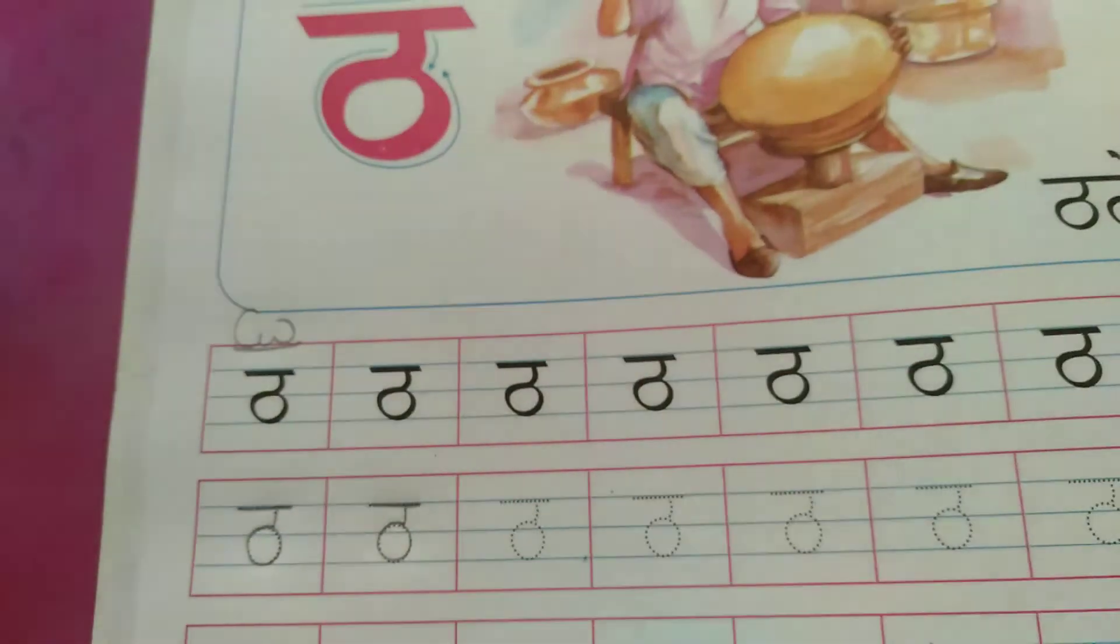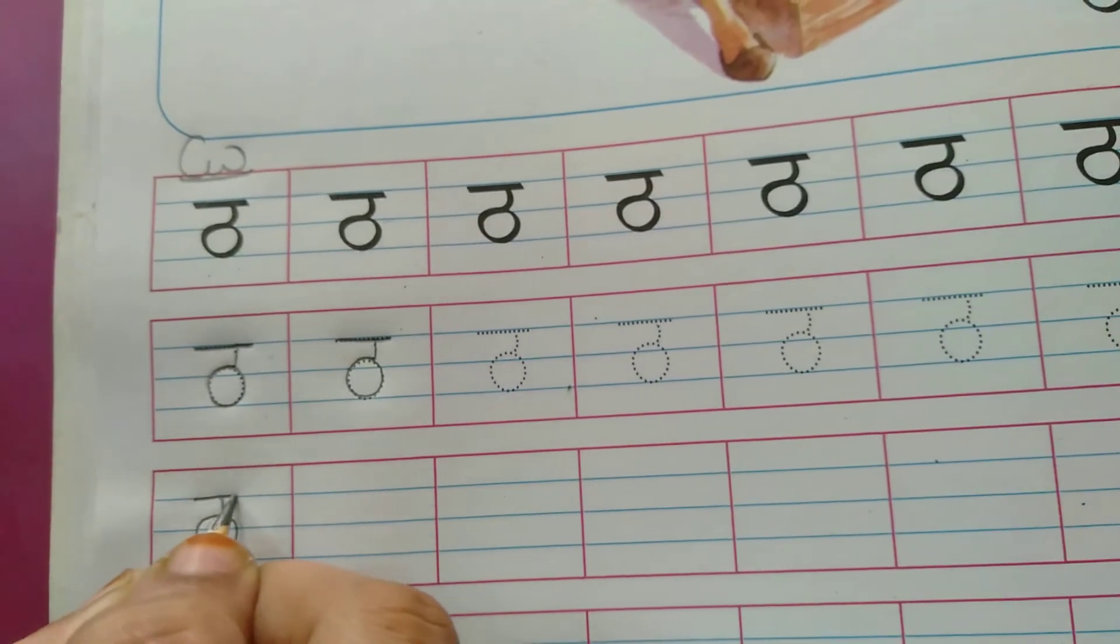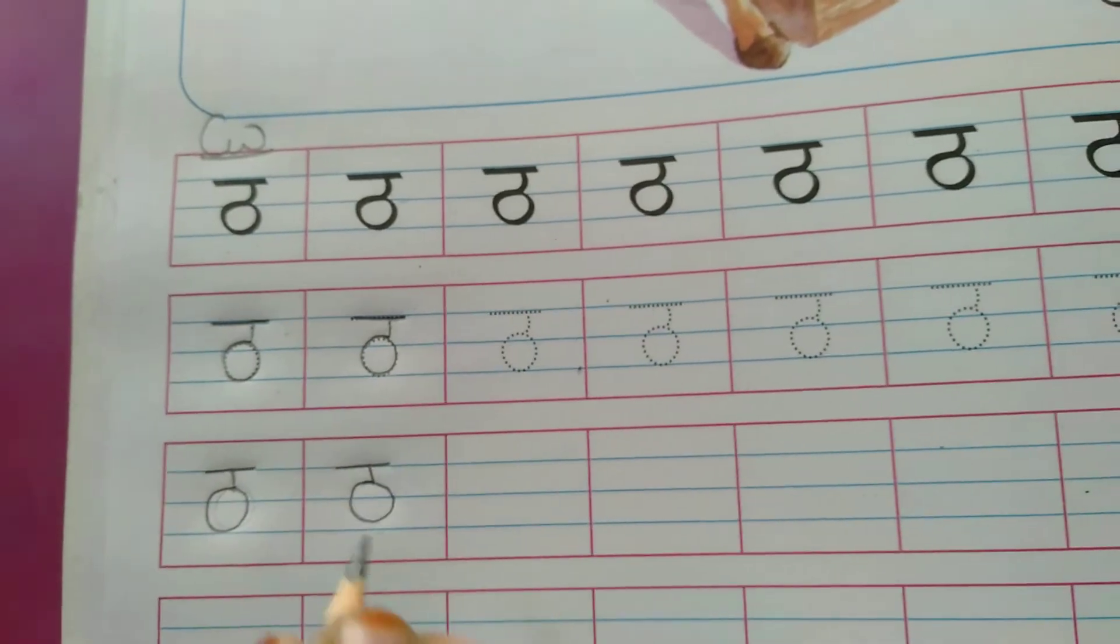Tha se Thatera. Standing line, circle, and slipping line. Standing line, circle, slipping line.